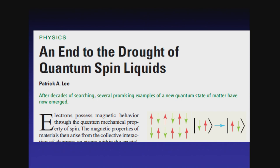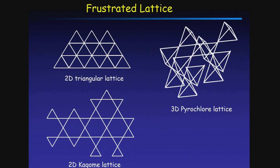This is a review article by Patrick Lee from about 10 years ago, saying 'an end of drought of quantum spin liquid' — meaning we have quantum spin liquid as a reality. Around 10 years ago, we started discovering realistic quantum spin liquid candidates. Now I will talk about how to materialize these concepts in real compounds. I will discuss organics, inorganics, and oxide in this afternoon.